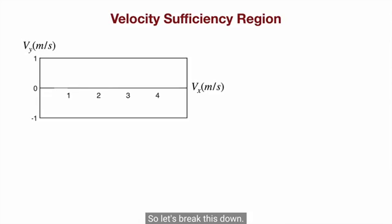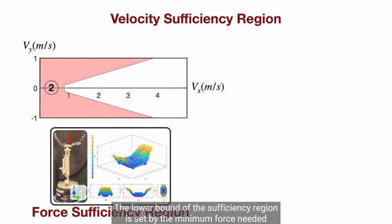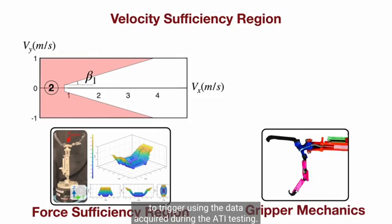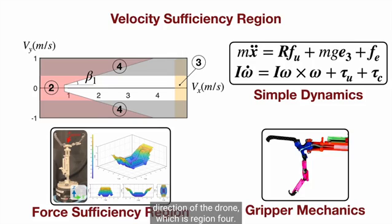So let's break this down and first take a look at the Y-Z direction. The lower bound of the sufficiency region is set by the minimum force needed to trigger, using the data acquired during the ATI testing. The sides are bounded by the maximum rotational compliance for the yaw direction and pitch direction of the drone. The upper bound is constrained by the maximum controllable impact force in the pitch direction, region 3, and the maximum allowable force in the yaw direction of the drone, which is region 4.